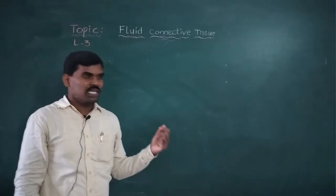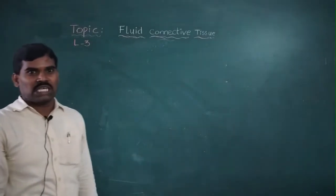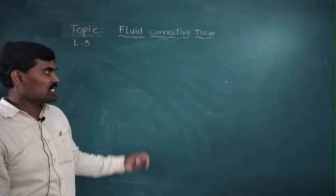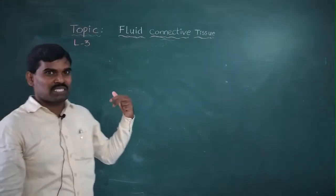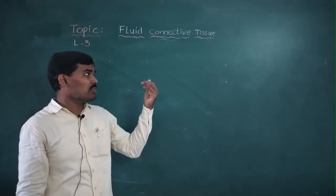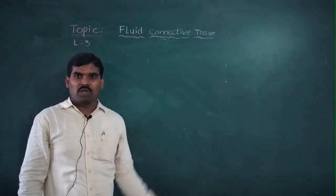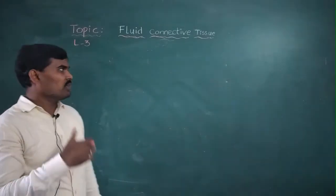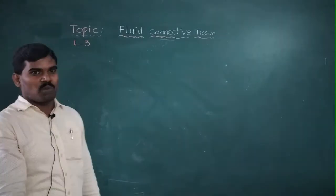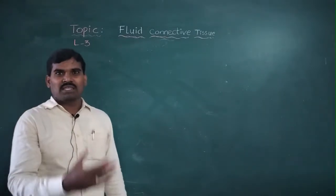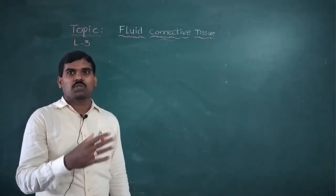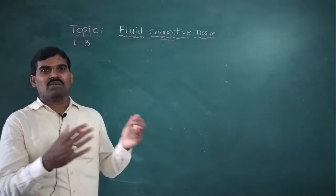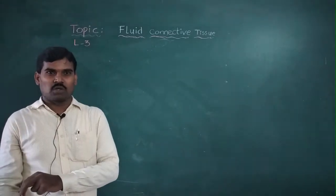The last class explained the RBCs and WBCs completed. The WBCs have two types: granulocytes and agranulocytes.